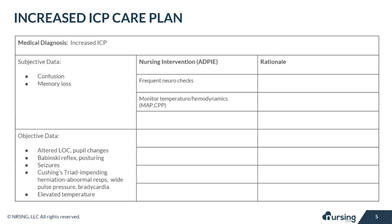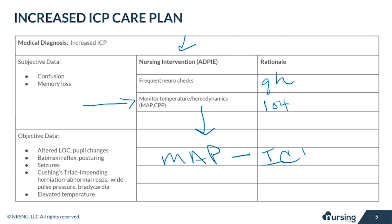Complete neurochecks every hour, as neurological changes related to increased ICP may be subtle or rapid. Frequent detailed neurochecks allow changes to be recognized quickly so interventions can be initiated. An elevated temperature, sometimes as high as 104, is common with increased ICP because of the loss of autonomic regulation, so monitor your patient's temperature. Also monitor hemodynamics to assess for Cushing's triad and to evaluate cerebral perfusion pressure, which is the difference between mean arterial pressure and intracranial pressure.